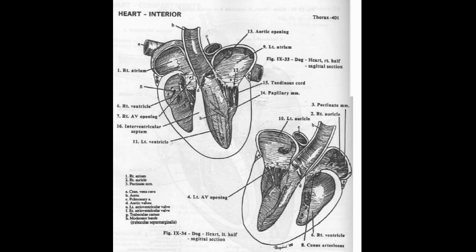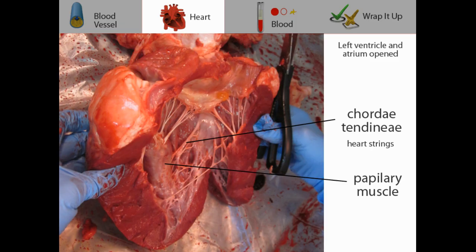The bicuspid valve is named as such because it has only two cusps: the septal cusp and the parietal cusp. Like the tricuspid valve, the cusps of the bicuspid valve are attached to the papillary muscles through fibrous cords called chordae tendineae.